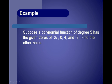Suppose a polynomial function of degree 5 has the given zeros of negative 2i, 0, 4, and negative 3. Find the other zeros. For the first zero, we have 0 minus 2i, so the conjugate is 0 plus 2i, meaning 2i is a zero. Because the degree is 5 and we already have 4 listed, we're only missing 1, so that one is 2i.